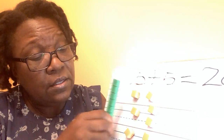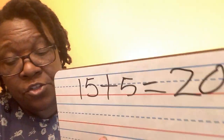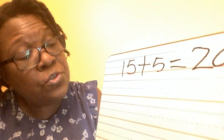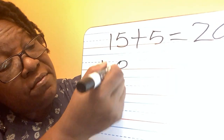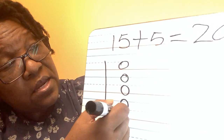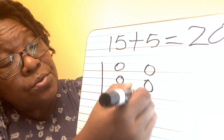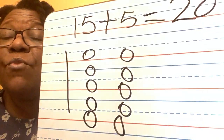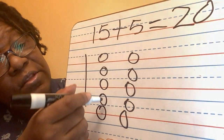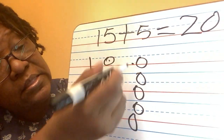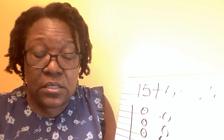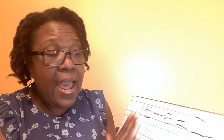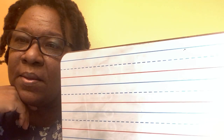Now we're going to draw it — get your markers ready. We're going to draw 15: 10, 11, 12, 13, 14, 15. And 5: 1, 2, 3, 4, 5. Same way again — you count 10, 11, 12, 13, 14, 15, 16, 17, 18, 19, 20. The answer is 20.